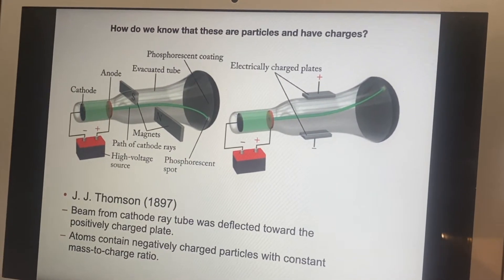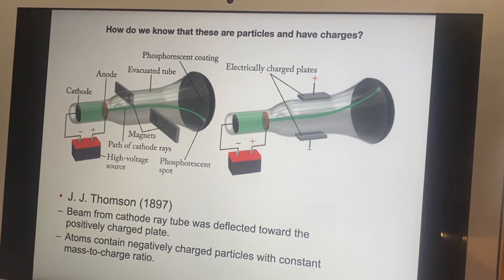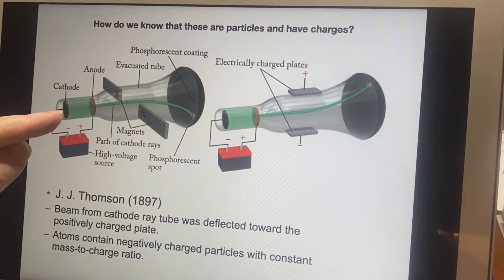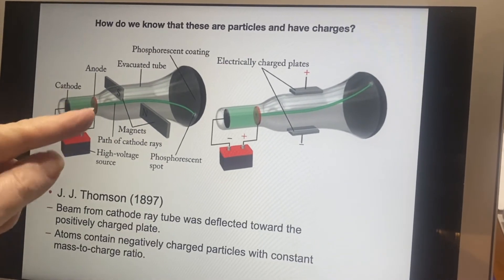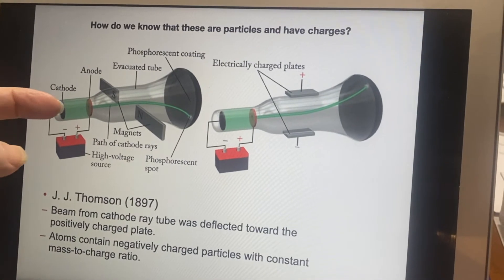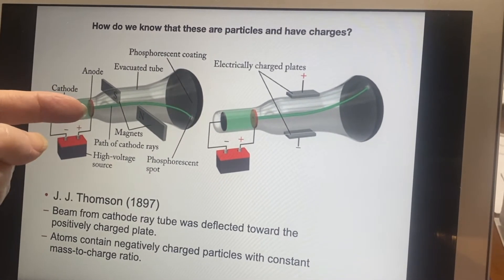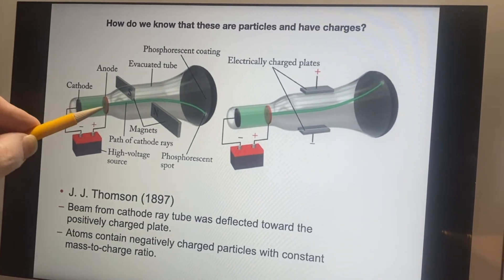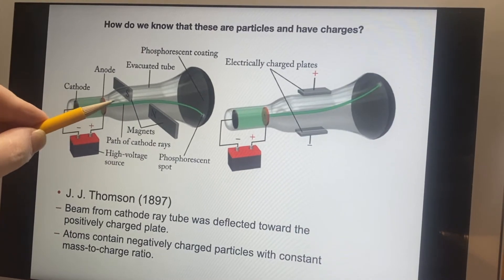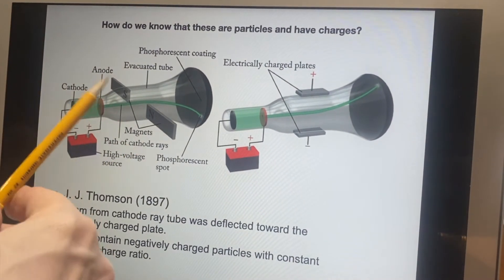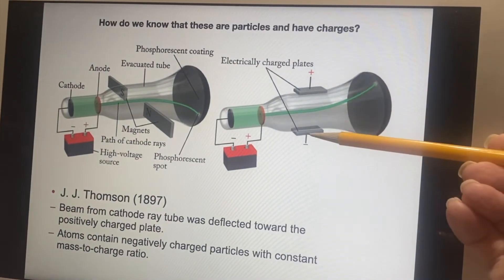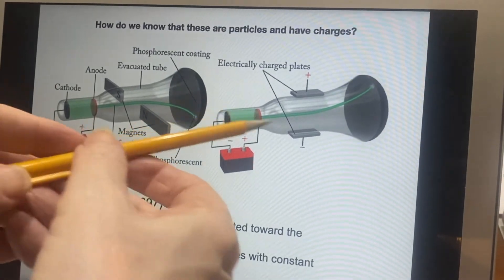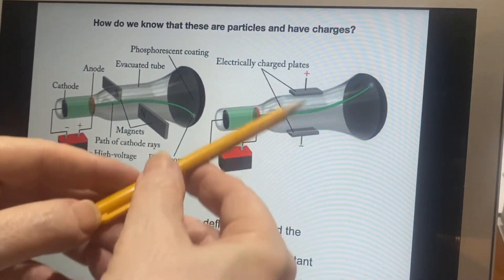Now, why should we believe that these things are particles, and why should we believe that they have a charge? Here is a very simple cathode ray tube. All they were doing was producing the particles at the cathode. Since the cathode and the anode have different charges, the particles would accelerate to get to the anode. They were trying to complete the circuit. But, the anode itself, if you look very closely here, you'll see there's an opening in it. So, the ones that don't actually hit the anode end up flying right through the center, and that makes a thin beam.